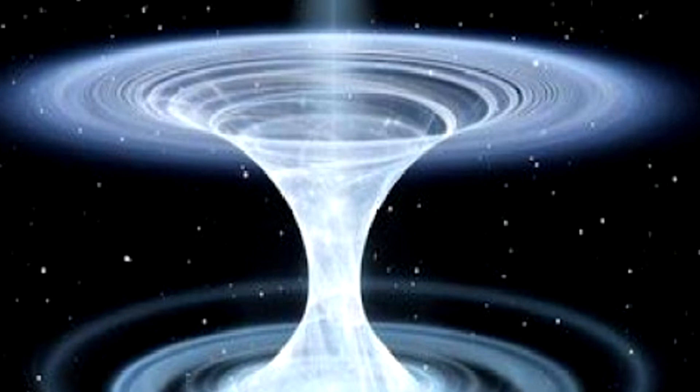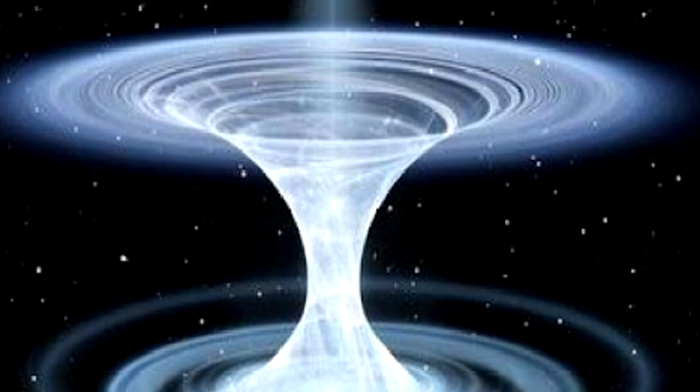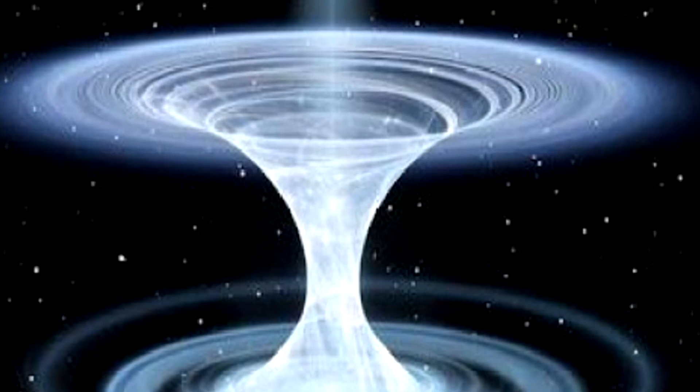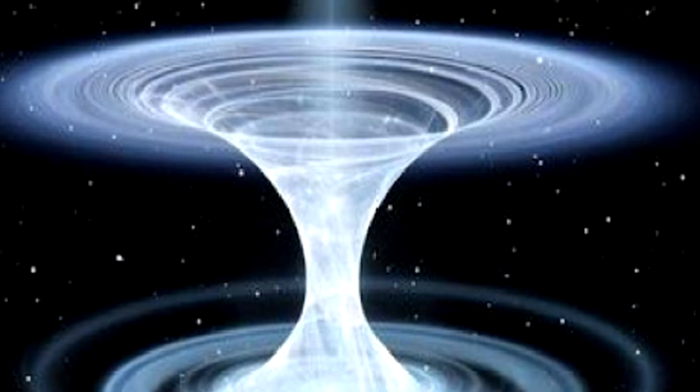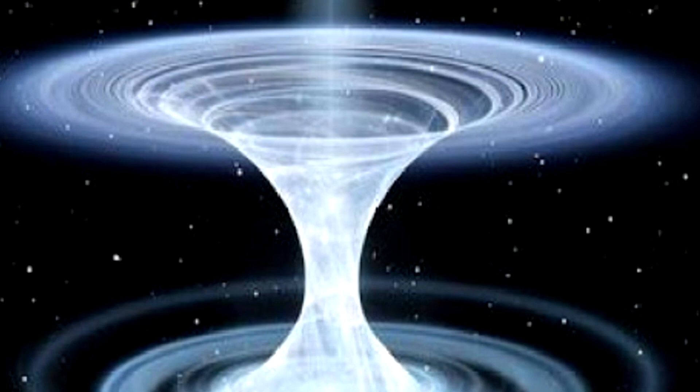Experts say that in the presence of powerful gravitational fields, time slows down. And black holes contain what are thought to be the strongest gravitational fields in the universe. Because of this, a possible interpretation of this new work is that matter falls into a black hole and then bounces, firing the mass through the cosmos.